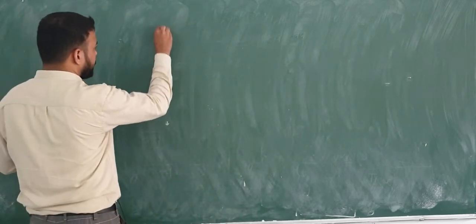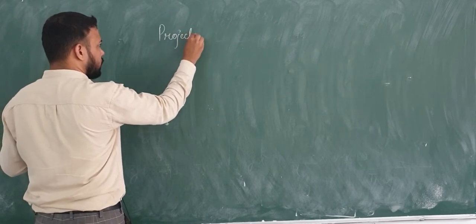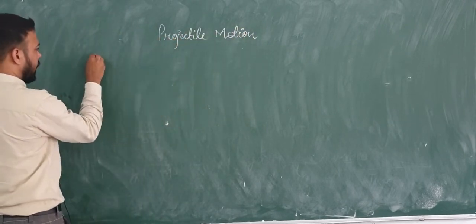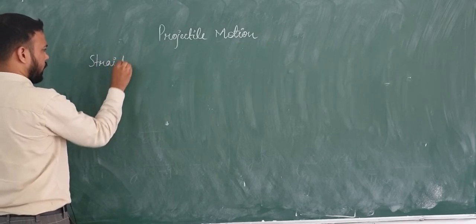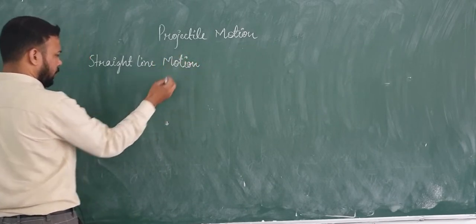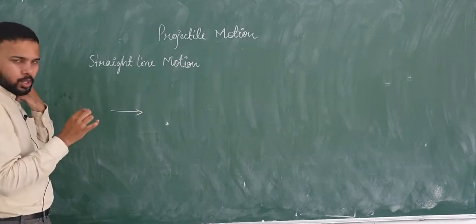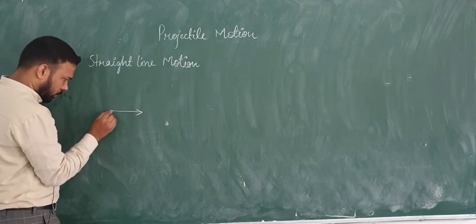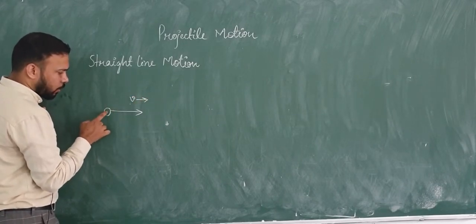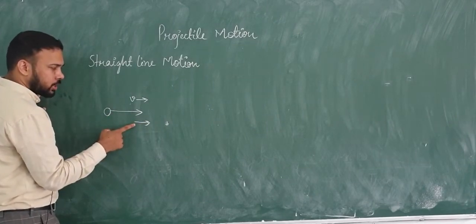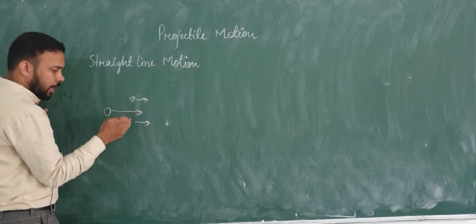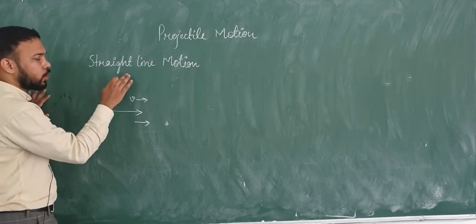To start projectile motion, first I am going to clear out two things: what is the difference between projectile motion and straight line motion. If I am throwing a body in horizontal direction, then the direction of velocity is parallel to the ground, and the direction of motion of the body is also parallel to the ground. When the velocity of the body and direction of motion of the body are the same, the motion is said to be straight line motion.